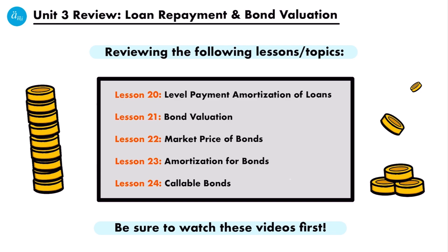More specifically, we're going to be reviewing the topics that I cover in lessons 20 through 24 of my financial mathematics series. That includes level payment amortization of loans, bond valuation, market price of bonds, amortization for bonds, and callable bonds. We will also talk about non-level payment amortization a little bit.